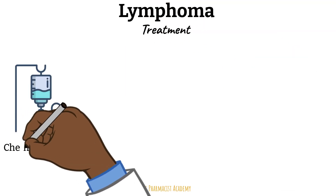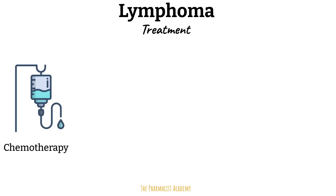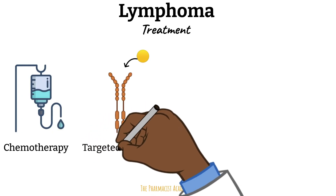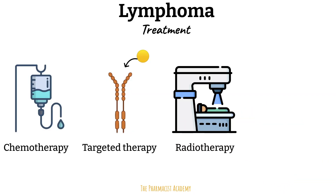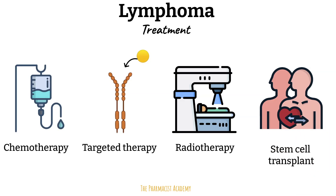Treatment involves chemotherapy, which targets rapidly dividing cells and interferes with the cell cycle or directly damages DNA. Targeted therapy is used especially when the disease has specific mutations or genetic markers. Radiotherapy also plays a role. For stem cell transplant, when lymphomas respond well initially but then relapse or become resistant, doctors use very high doses of chemo to kill resistant lymphoma cells. This also destroys the bone marrow, so stem cells are then infused back into the patient's bloodstream to migrate to the bone marrow and regrow a healthy blood system.